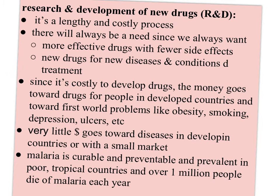The last part of 15.1 talked about research and development of new drugs, or R&D. First, it's lengthy and costly. Secondly, there will always be a need, since we're always going to want more effective drugs with fewer side effects, and there will always be new diseases and conditions that we'll want treatment for. Since it's costly to develop drugs, money goes toward drugs for people in developed countries who can afford them, largely toward first-world problems like obesity, smoking, depression, and ulcers. Very little money goes toward diseases in developing countries or where there's a small market — for example, malaria is curable and preventable but prevalent in poor tropical countries, with over a million people dying of malaria each year.